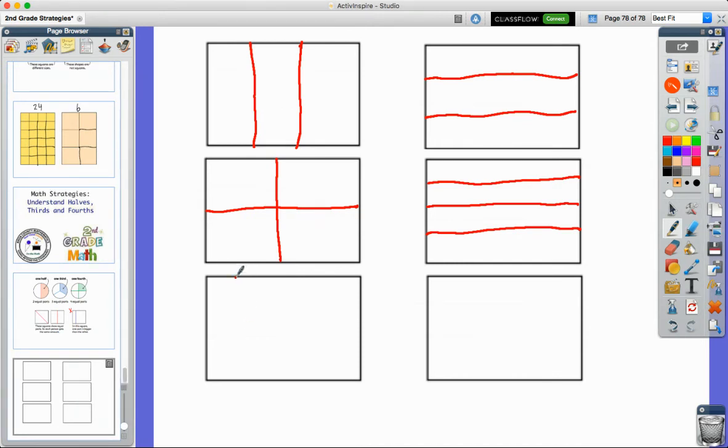I could also do that vertically. So I'm going to divide it up like this. And again, my drawing is not perfect, but you kind of see that those will be four equal parts. And that's what's important.